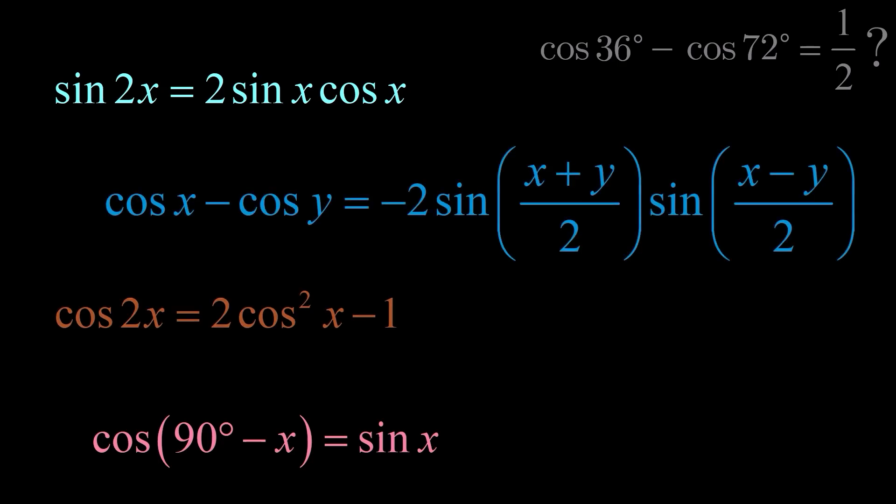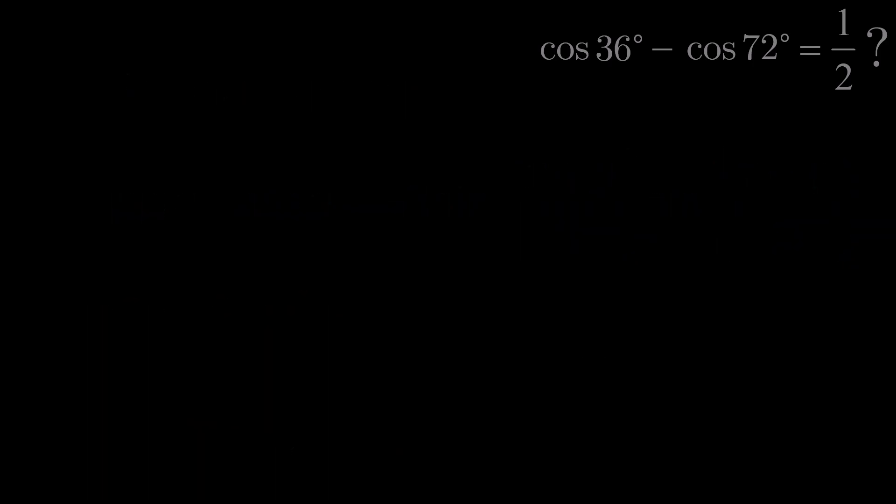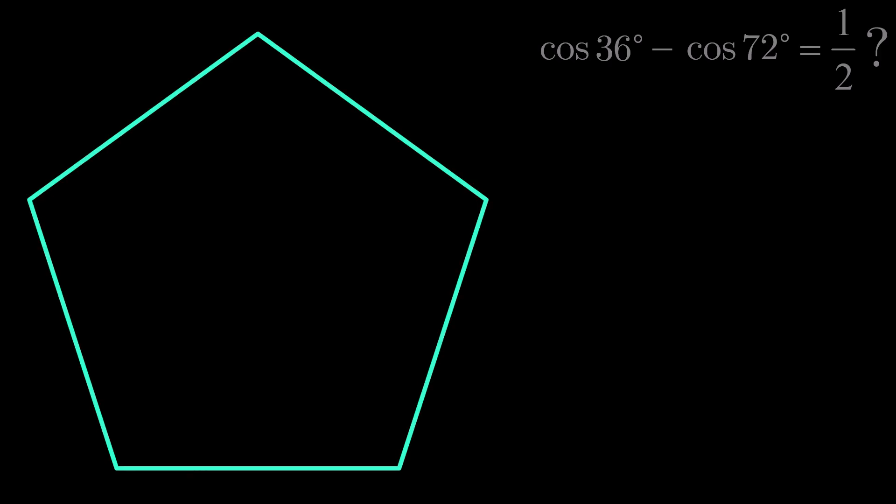We could prove that the relationship is true by using trigonometric identities to evaluate cos 36 degrees minus cos 72 degrees, or to determine the exact value of each of these ratios individually. But instead let's explore a beautifully elegant visual explanation of this seemingly unexpected result, starting with a regular pentagon.